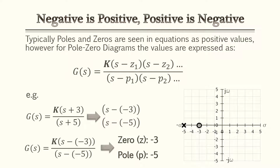Here's where the curveball comes in. Typically poles and zeros are seen in equations as positive numbers. However, for pole-zero diagrams the values are expressed differently — it's s minus your first zero, times s minus your second zero, and so on. Same with your poles: s minus your first pole, second pole, and so on.